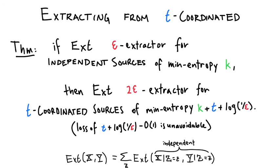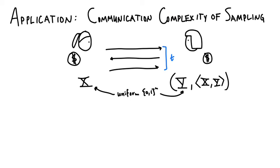The high-level idea for why you can extract from T-coordinated sources is that these pairs of sources are convex combinations of independent sources. This result has a very nice application in the domain of the communication complexity of sampling.